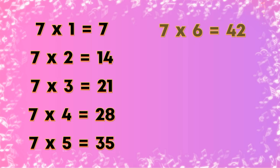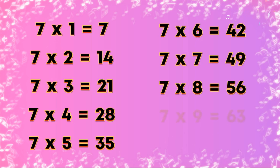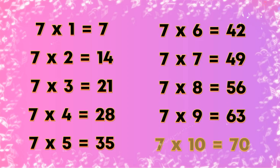Table of 7: 7×1=7, 7×2=14, 7×3=21, 7×4=28, 7×5=35, 7×6=42, 7×7=49, 7×8=56, 7×9=63, 7×10=70.